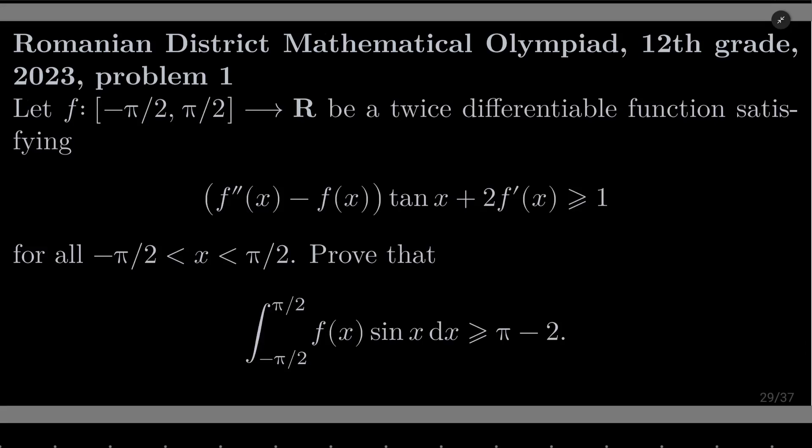Hello friends. In this video I'd like to solve the following problem from the Romanian District Mathematical Olympiad, 12th graders, 2023, problem number 1. Let f be a function from minus pi over 2 to pi over 2, compact interval, into the set of real numbers. Let it be a twice differentiable function which satisfies a given inequality for all x strictly between minus pi over 2 and pi over 2. We wish to prove that the integral from minus pi over 2 to pi over 2 of f(x) sin(x) dx is greater than or equal to pi minus 2.